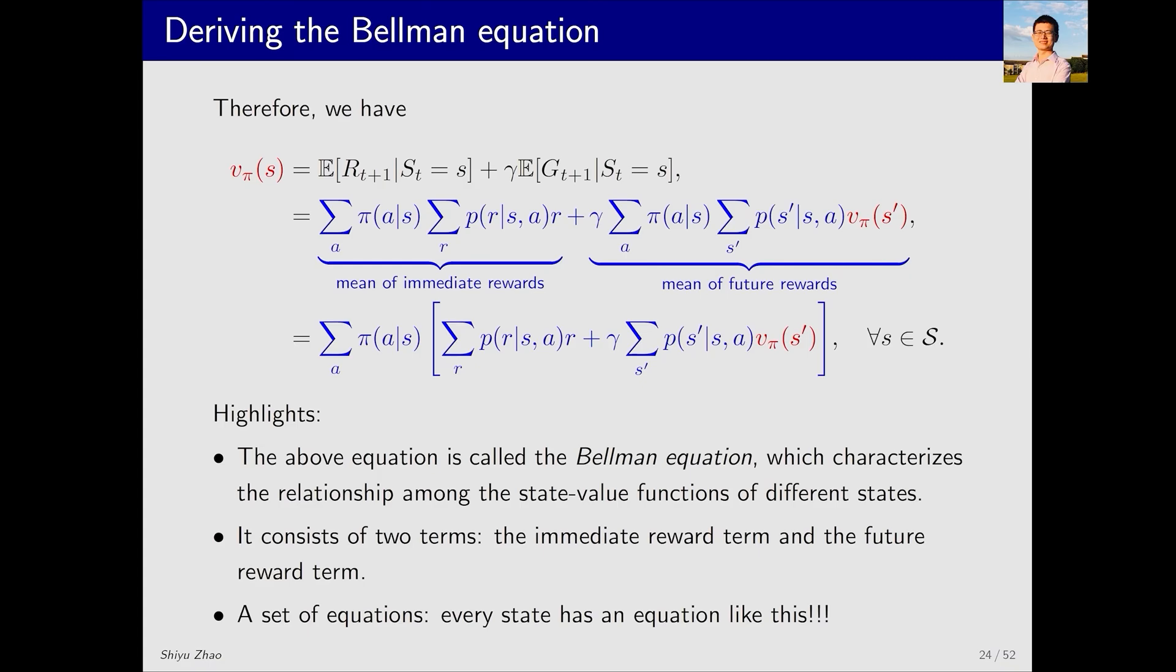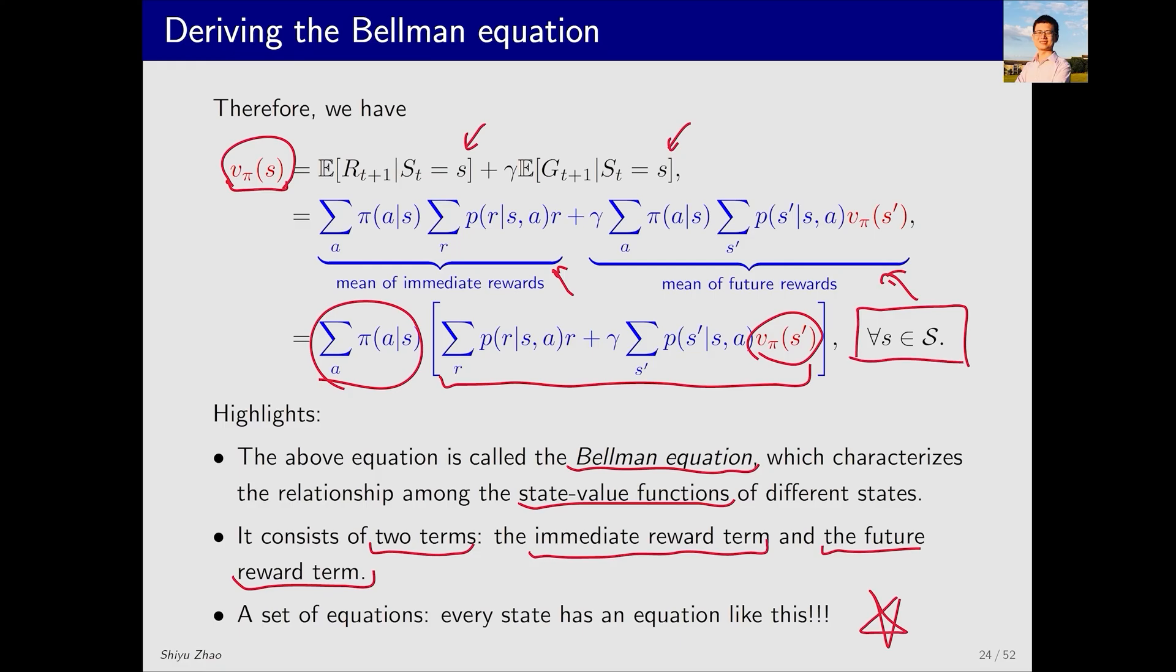Now, we present the expression for the Bellman equation. Starting from here, we have two expectations, which we have already calculated. We place their expressions here, and then we get another expression by extracting a term from these two. Do not be intimidated by this equation. It is actually quite straightforward, and we will explain it with examples later. The above equation is called the Bellman equation, which essentially describes the relationship among the state values of different states. The left-hand side is the state value of s, while the right-hand side involves the state value of s', thus expressing their relationship. Additionally, the equation consists of two terms: the immediate reward and the future reward. It's crucial to understand that this is not a single equation, but a set of equations that hold for all states in the state space. If we have n states, we will have n such equations. By solving these equations together, we can determine the state values.